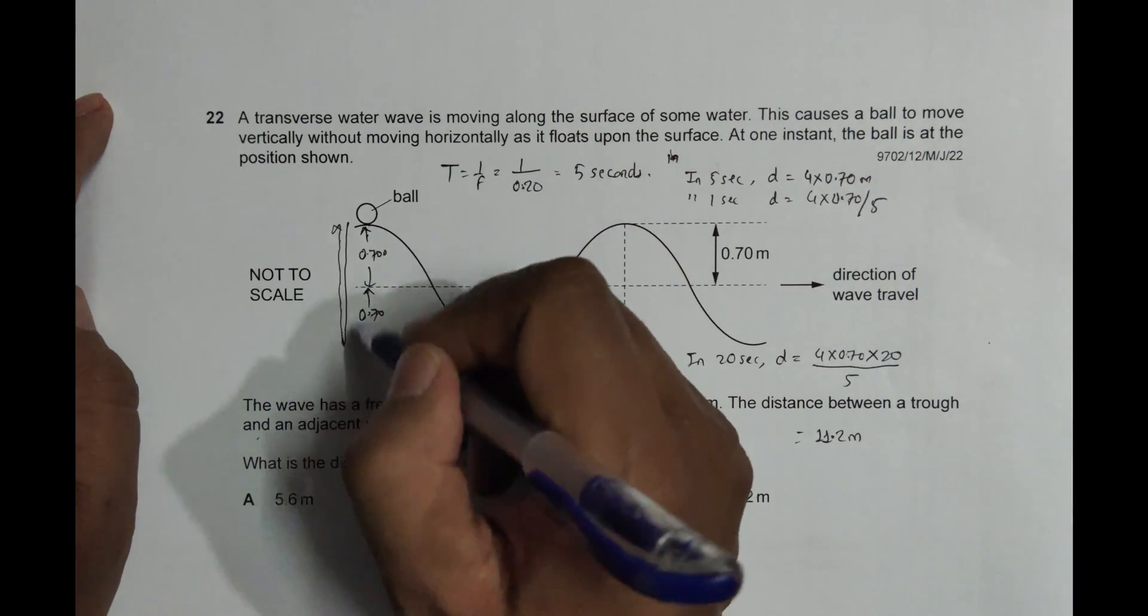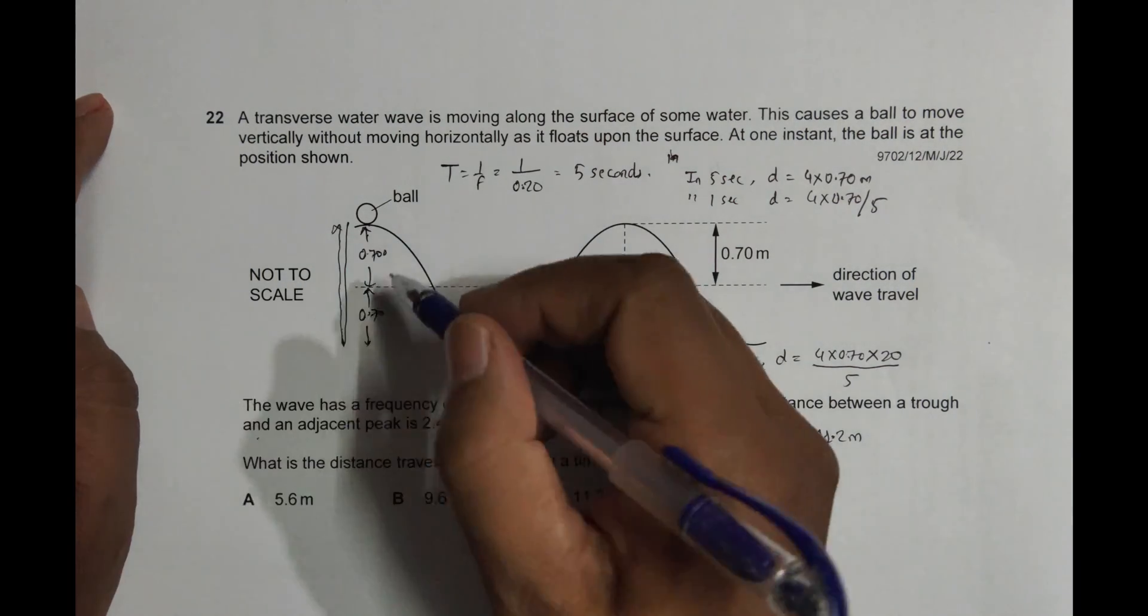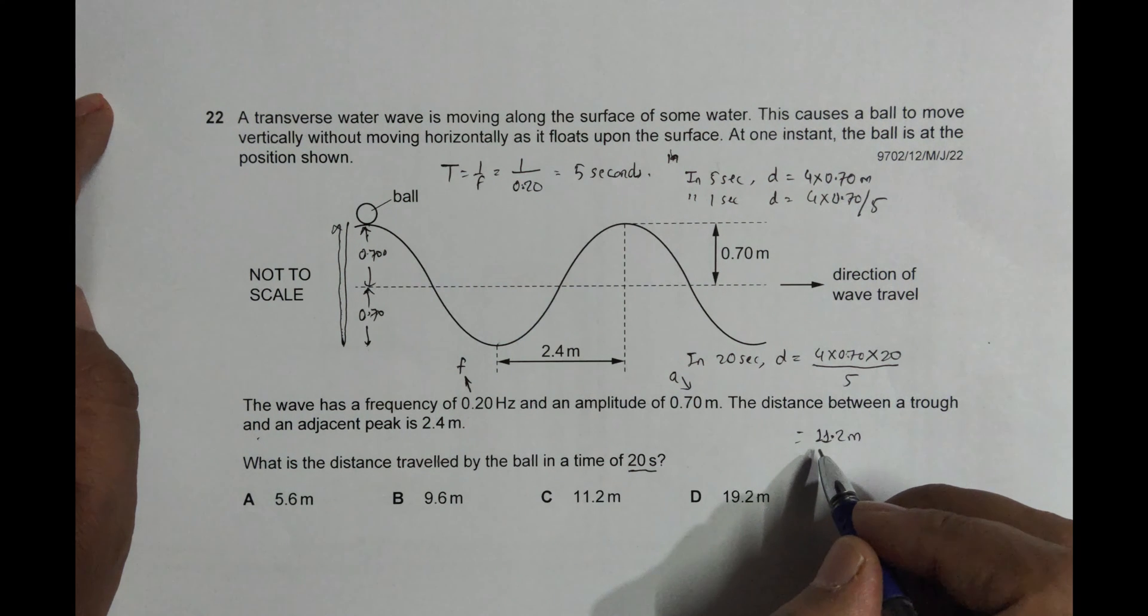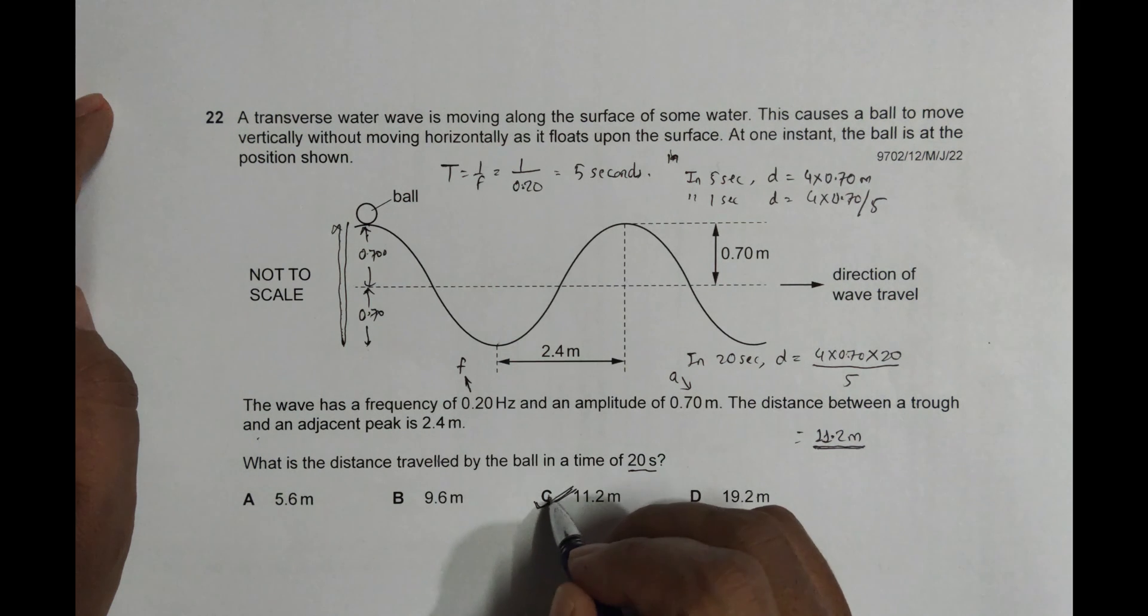So by doing this, for 20 seconds it will be traveling a distance of 11.2 meters. This gives choice C as the correct answer.